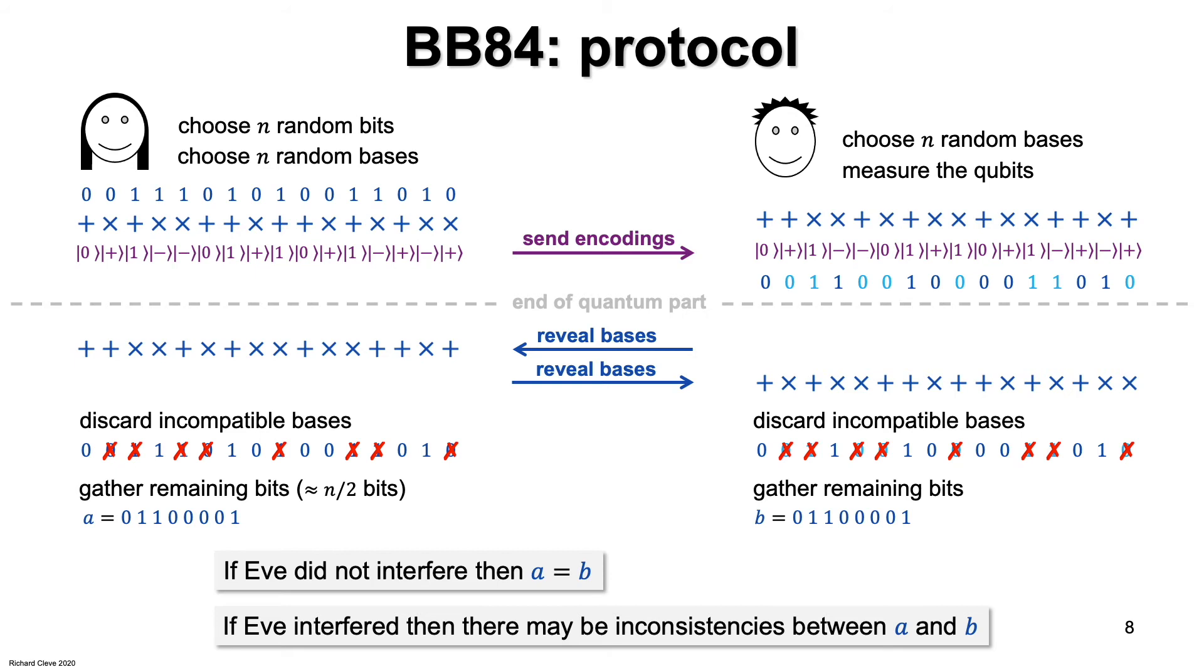In fact, Eve could do something better. Remember the in-between basis? The red lines from the previous slide? If Eve measures in that basis, then each bit of A and B will match with probability around 85%, the cos squared of pi over 8. So that's a better measurement for Eve to make. But still, around 15% of the bits of the strings A and B will be different. So both these ways, Eve's measurement causes inconsistencies in the strings A and B. How do Alice and Bob check these inconsistencies? Let's continue with the protocol.